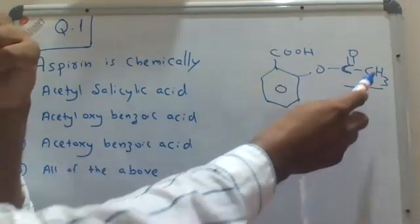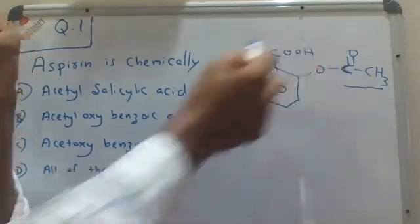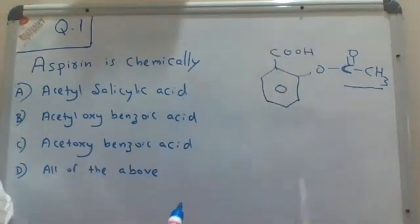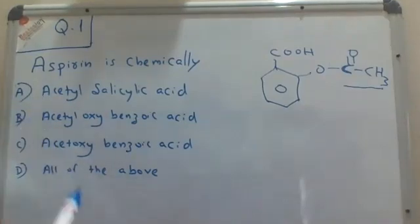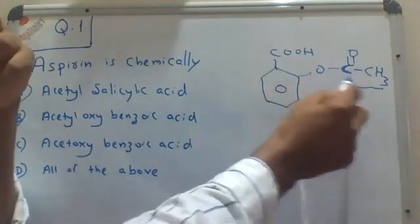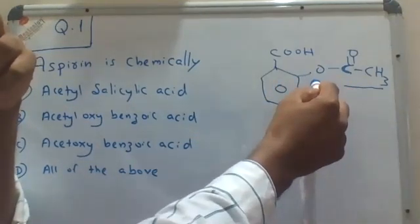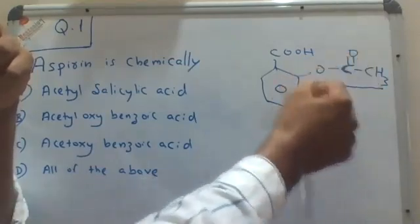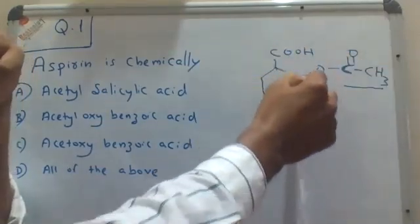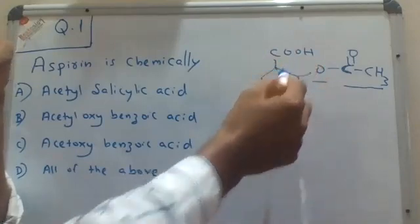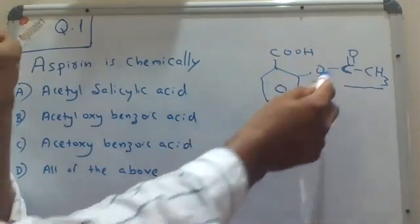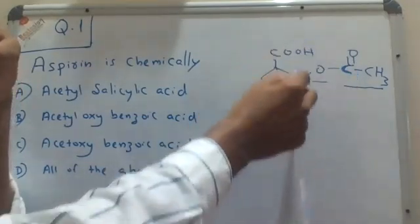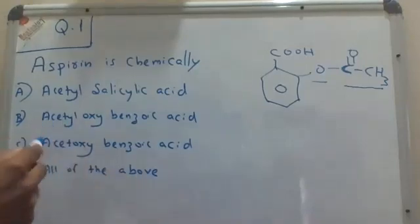You can call it acetylsalicylic acid, so the answer could be choice A. But if you look at choice B — acetyloxybenzoic acid — if you take the acetyl group and the oxy group together as an acetyloxygroup, the remaining compound is just benzoic acid, so we can also call it acetyloxybenzoic acid.